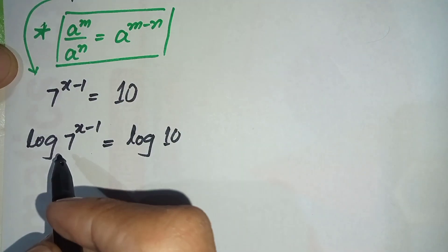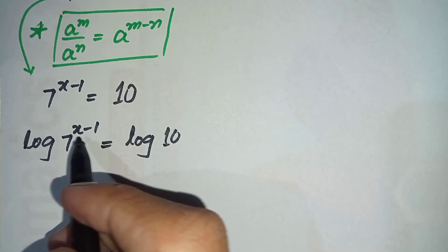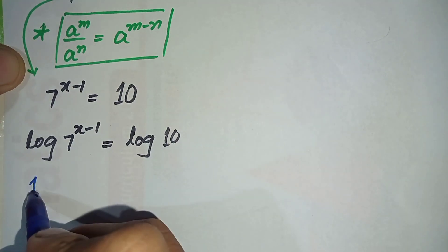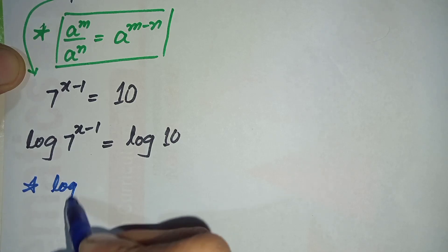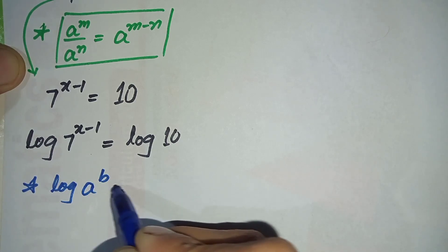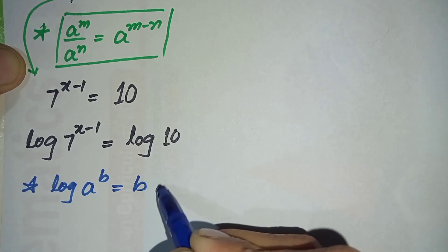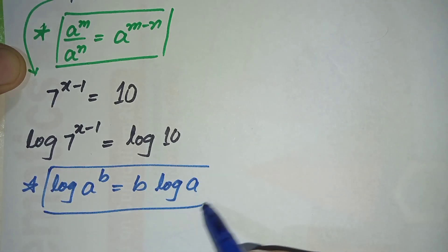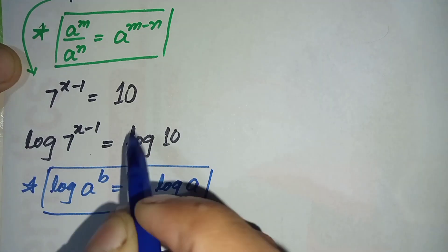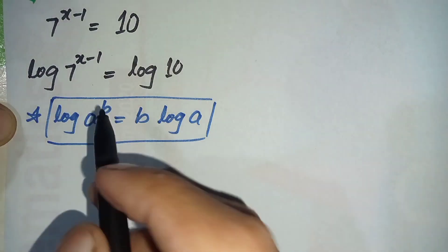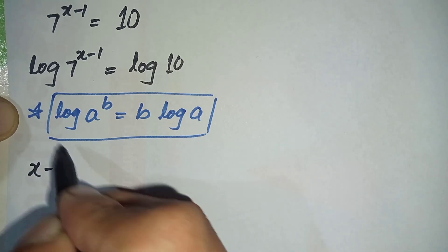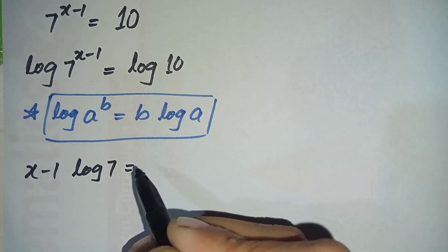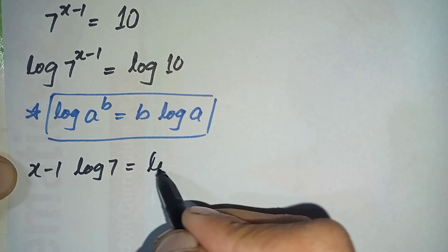Now on the left hand side we will use the log power formula and shift x minus 1 to the front. That log formula is: log of a raised to the power b is equal to b times log of a. By using this formula, the left hand side becomes x minus 1 times log of 7, and the right hand side remains log of 10.